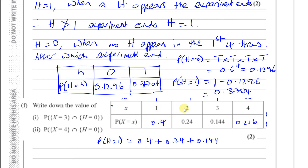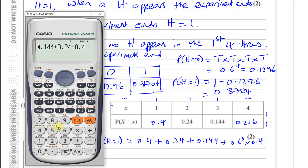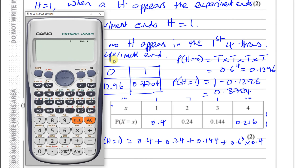Getting a head on the first throw is 0.4. Getting a tail then a head is 0.24. Getting two tails then a head is 0.144. Getting three tails then a head is 0.6 cubed times 0.4, which is 0.0864. Adding 0.4 plus 0.24 plus 0.144 plus 0.0864 gives exactly the same answer — 0.8704.